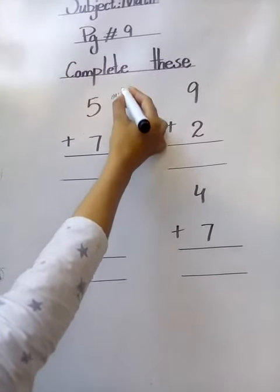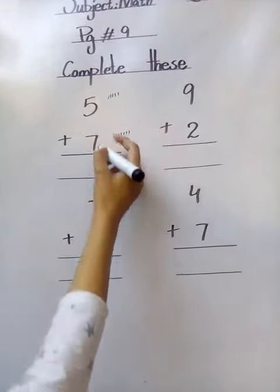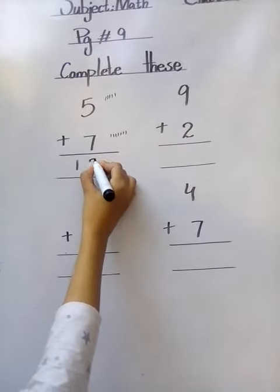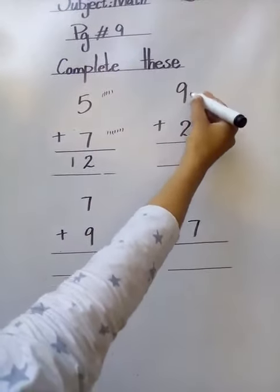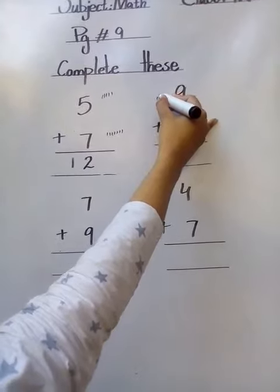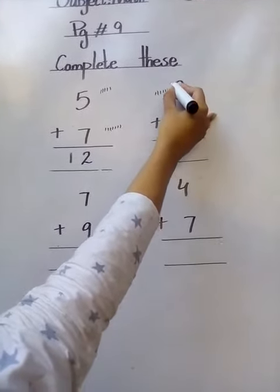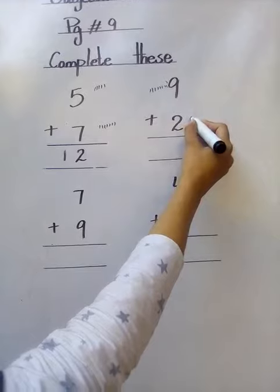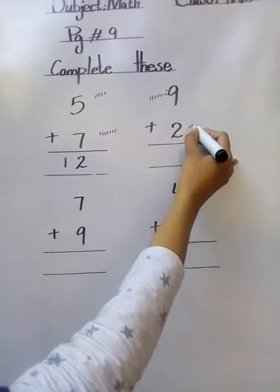Seven, eight, nine, ten, eleven, twelve. We will write here twelve. This is nine, we will draw nine lines: one, two, three, four, five, six, seven, eight, nine. And here we will draw two lines: one, two. Nine, ten, eleven. We will write here eleven.